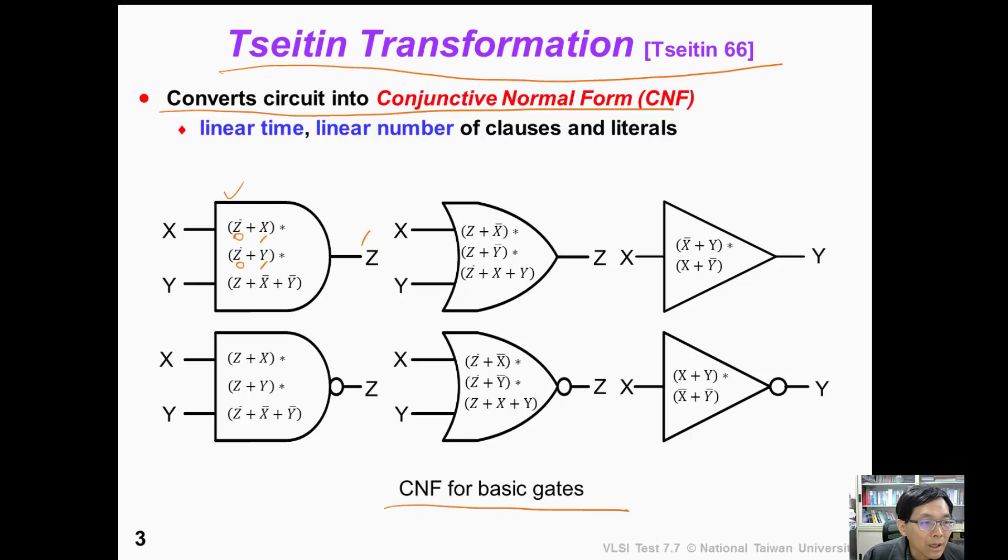On the contrary, if Z is equal to 0, then either X can be 0 or Y can be 0. So as long as we satisfy these three clauses, then we can find a correct assignment for this AND gate. This is the same for the other five different gates.